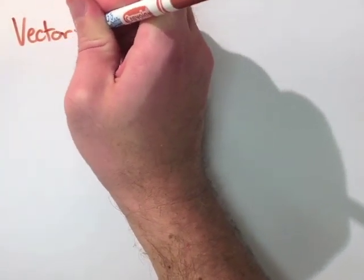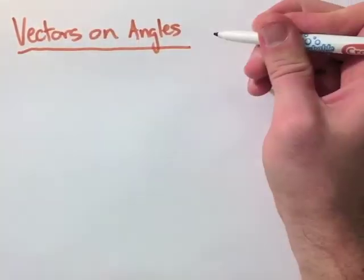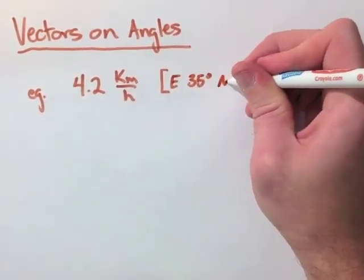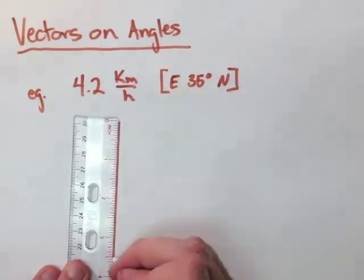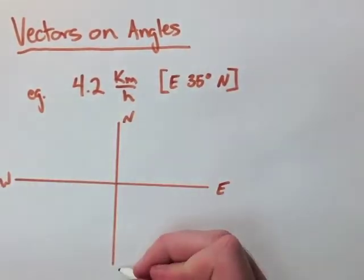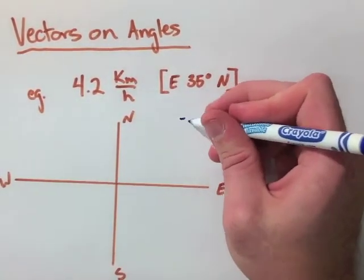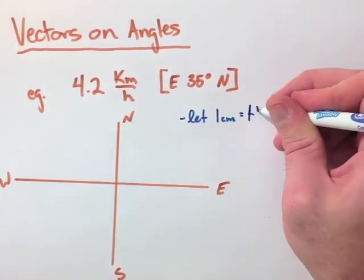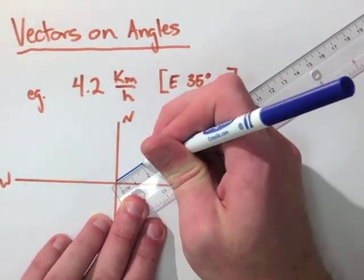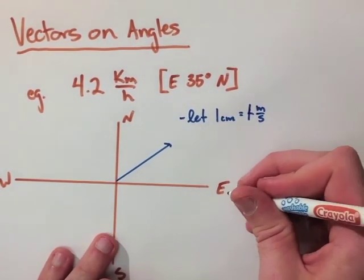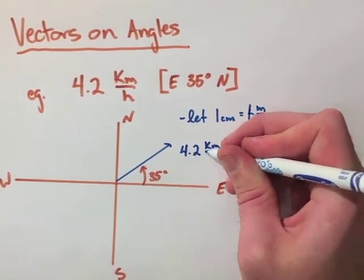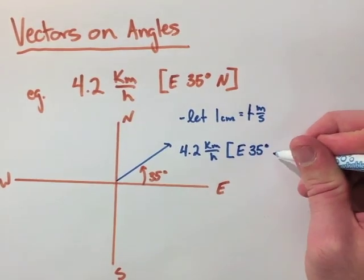The final thing we're going to look at here is drawing a vector which is on an angle. Realistically, no one travels in straight lines north and south and east and west their whole life. So let's look at 4.2 kilometers per hour, east, 35 degrees north. For this example, what's happening here is we're traveling a direction that's out to the east and then up north. So we set up a little Cartesian plane. Then we make our scale be 1 centimeter equal 1 meter per second. Now we draw our vector out. We would have measured this with a protractor. We end up going east and then up to the north, 35 degrees. And we label our vector 4.2 kilometers per hour, east, 35 degrees north.